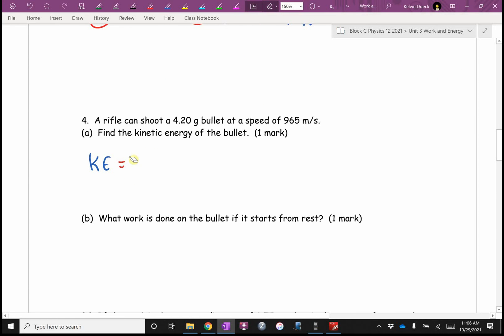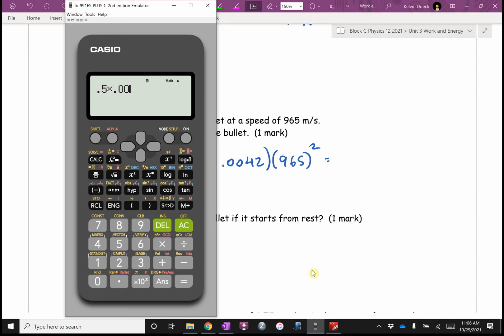This is going to be, oh change colors, a half mv squared. Really the only tricky part is I have to convert grams to kilograms, which is 0.00042 times 965 squared. A bullet doesn't have much mass. What it does have is a lot of velocity squared. If it hits its target and comes to a stop, where did all that energy get transferred? To the target. This is why bullets do damage. I get 1960 joules of energy.